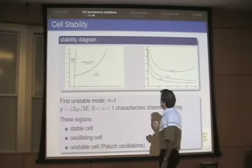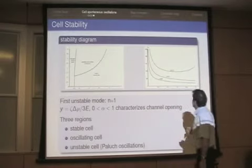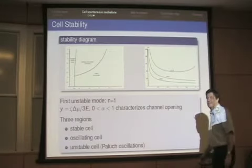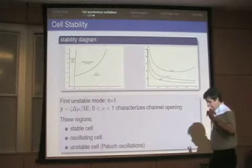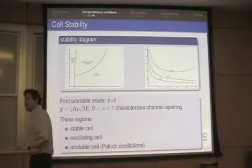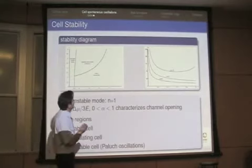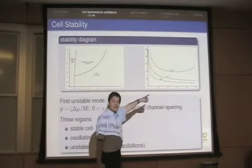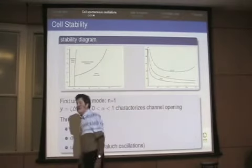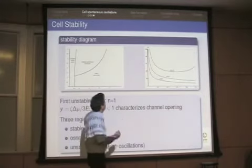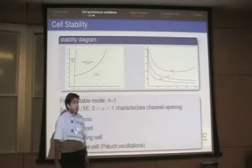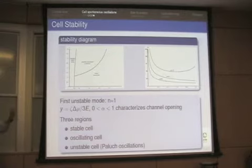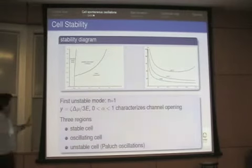We also calculated the period of oscillation, which decreases with activity. Experimentally, adding blebbistatin confirms that the period decreases with myosin activity. Putting in numbers, we get a period of roughly half a minute — consistent with the observed 37 seconds. These oscillations are associated with an instability of the cortical layer. That's my first example.